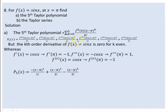Putting it all together with the factorial denominators — 1 factorial, 3 factorial, 5 factorial — we get the fifth Taylor polynomial for sin(x) at x = π.